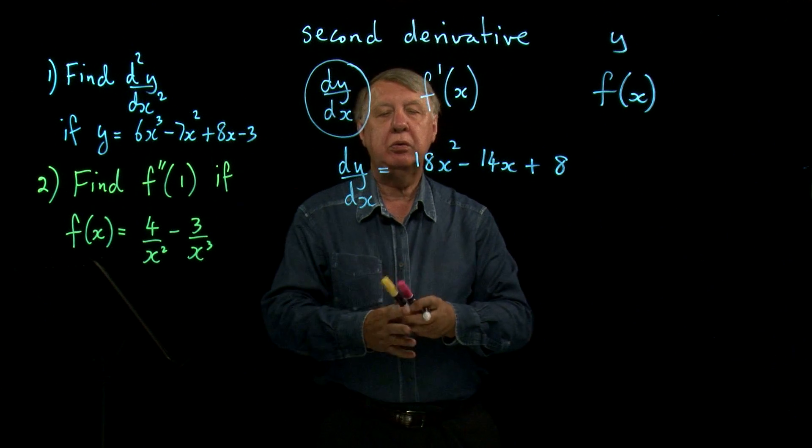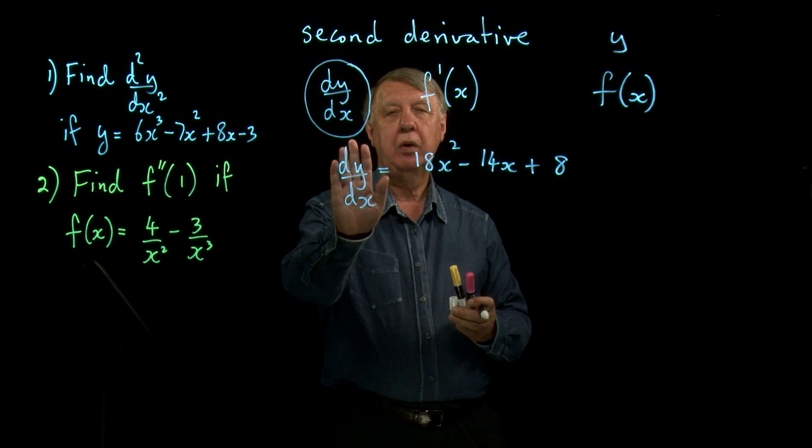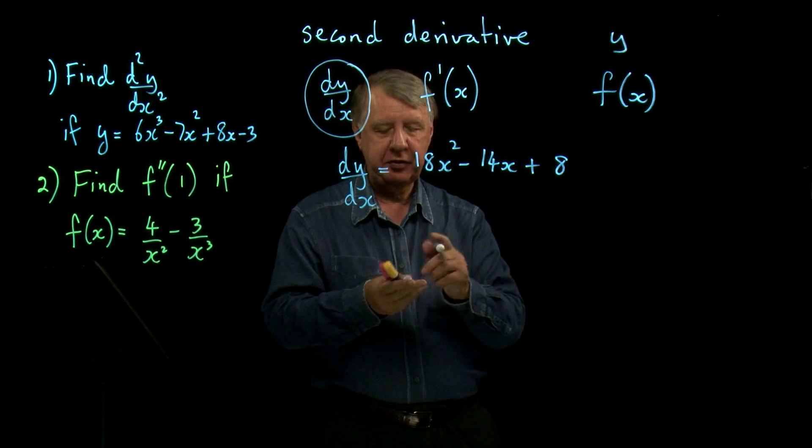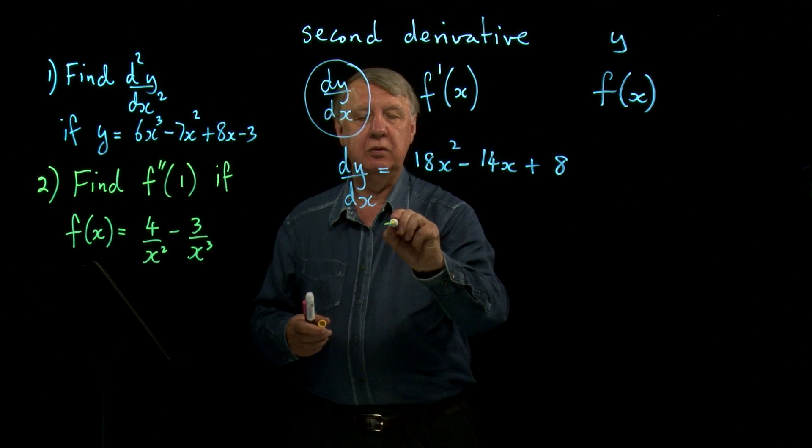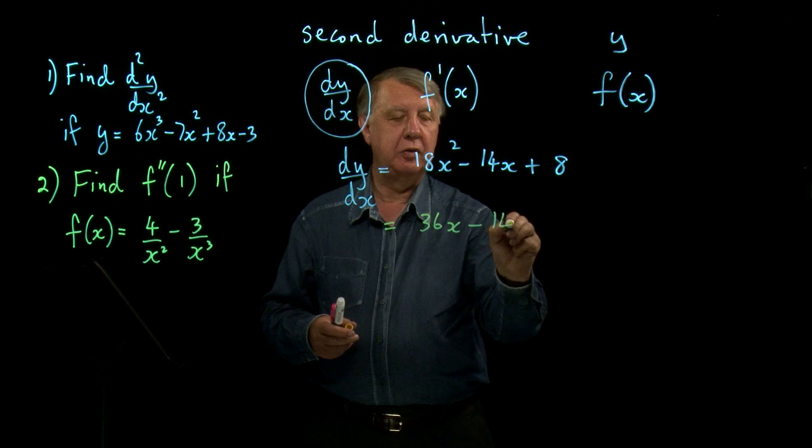Now, if you just for the moment forget that that's dy by dx, then of course, I could differentiate that again. And if I differentiated it again, I would get 36x minus 14.